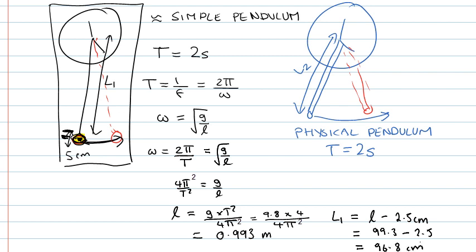Now, there are two things to think about. The first is always, at the end of a calculation, do a kind of order of magnitude check. Does that seem like a sensible answer? And again, I would say, thinking about the grandfather clocks that I have seen, 96 centimetres for the length of the string sounds pretty sensible.